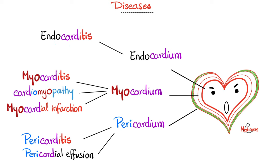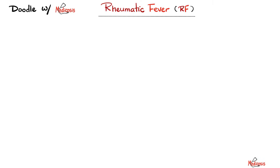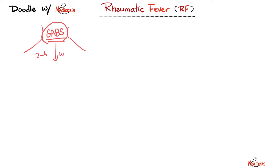Endocarditis only involves the endocardium. Myocarditis, cardiomyopathy, myocardial infarction — usually the myocardium. Pericarditis, pericardial effusion — pericardium. But rheumatic fever affects all layers. Here is my throat. I have group A beta-hemolytic streptococcus infection in my throat, also known as streptococcal pharyngitis. Then give me between two and four weeks, and I can develop a rheumatic fever.